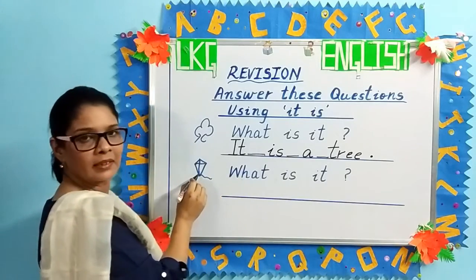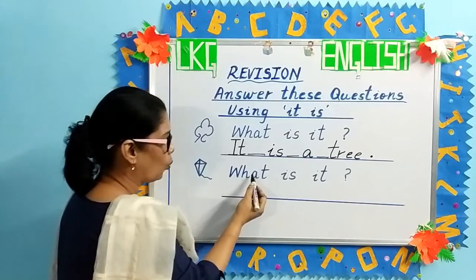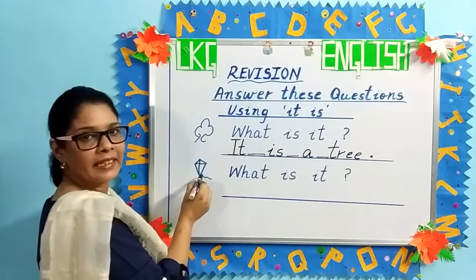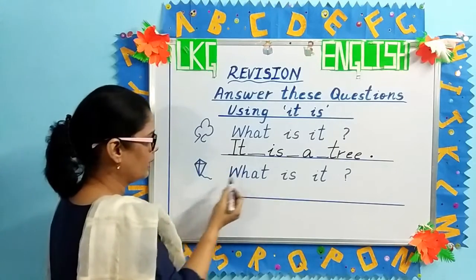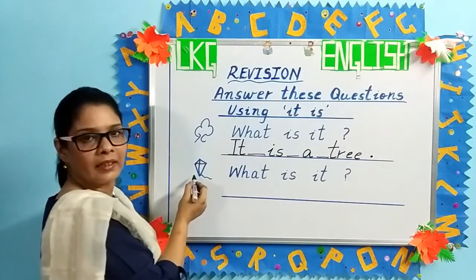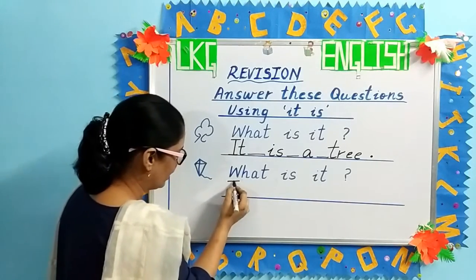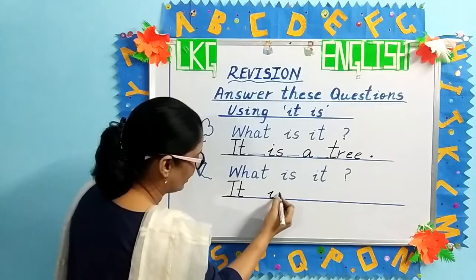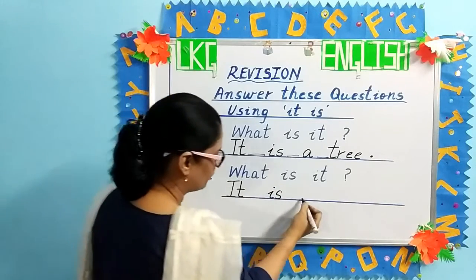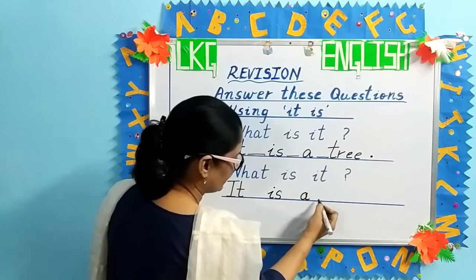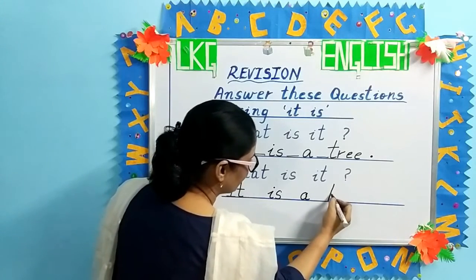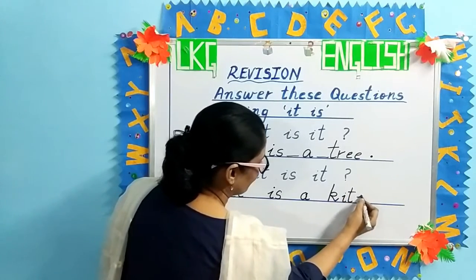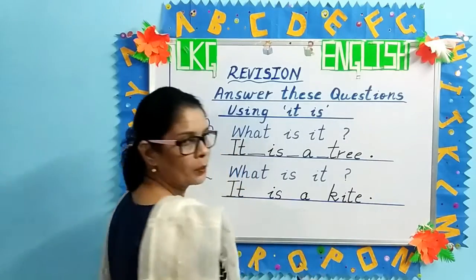The next question: what is it? It's a kite. What is it? It is a kite. Your answer will be: it is a kite. Again, capital I, small t — 'it' — leave space, 'is,' leave space, 'a kite.' One finger space. K, I, T, E — kite — and put a full stop. Understood, children?